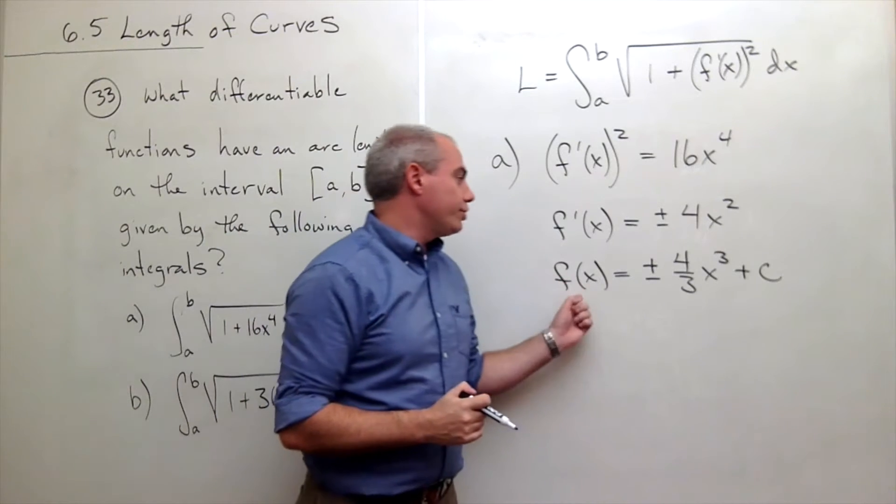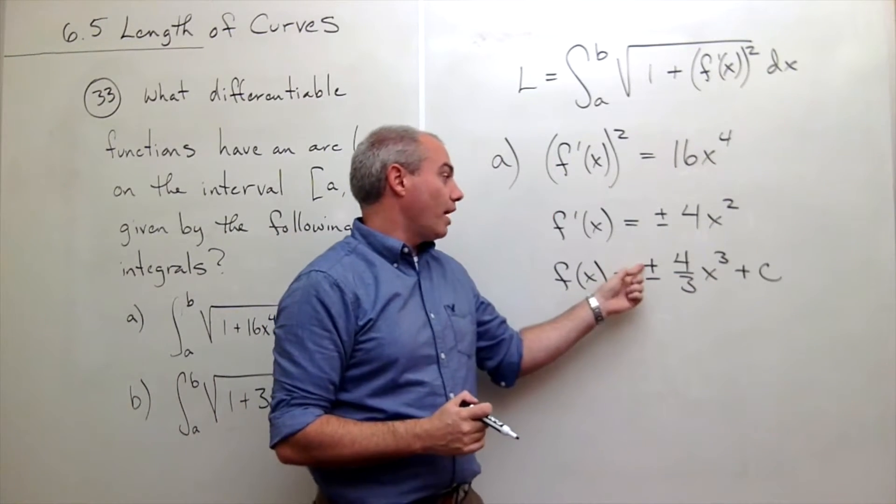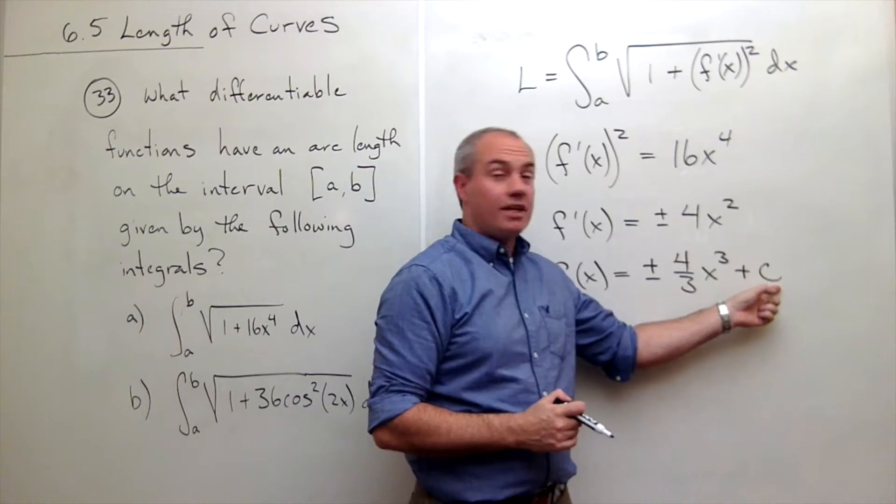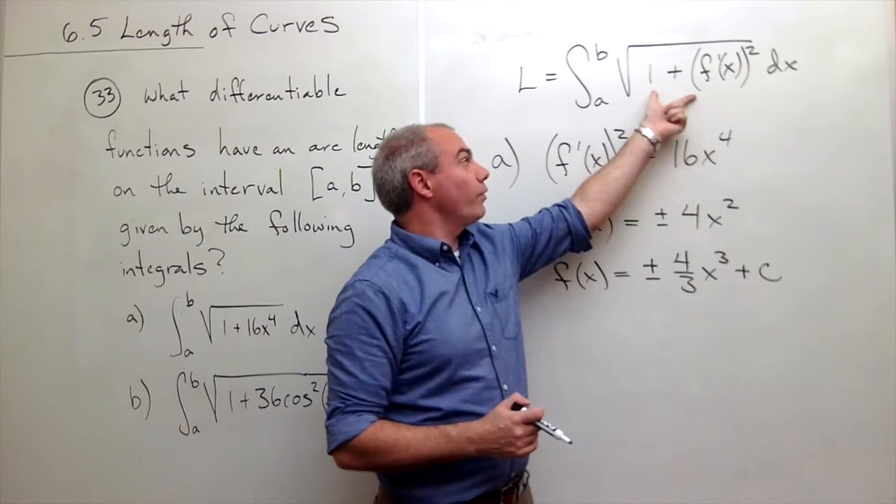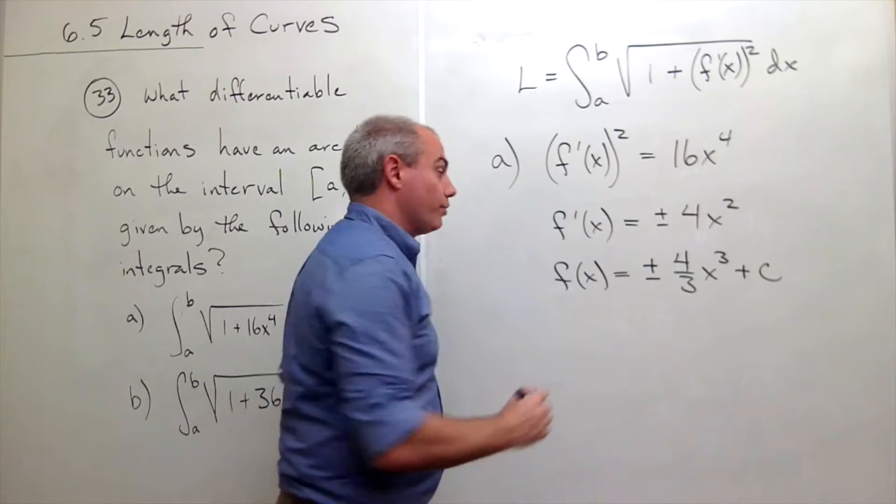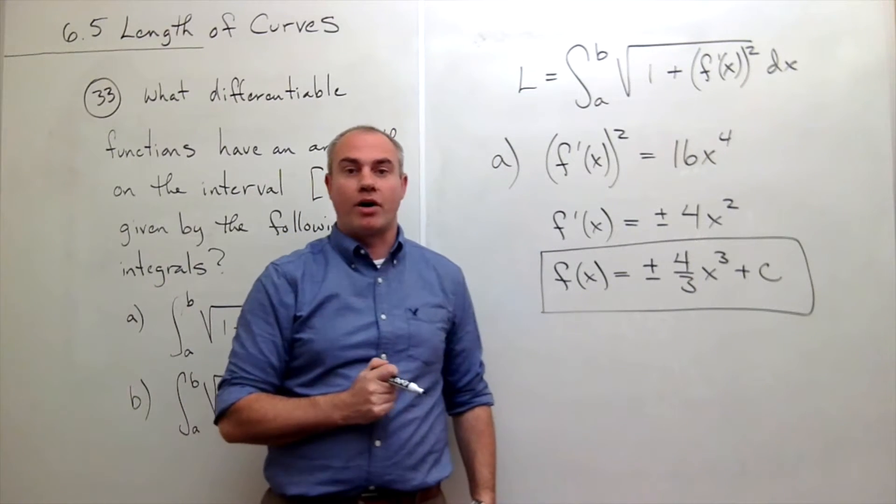So if my original function were any function of this type, plus or minus 4 thirds x cubed plus any constant I want, then this would be the equation for my arc length. And so this is exactly the family of functions that I'm looking for to solve part a.